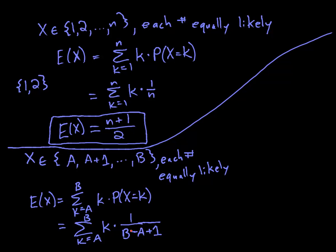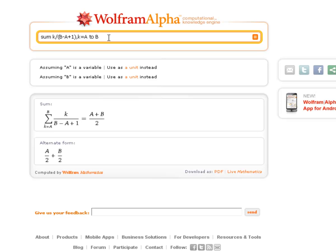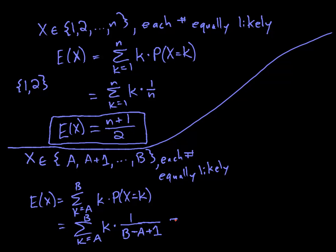We'll enter this into Wolfram Alpha. We have the sum of k divided by B minus A plus 1. And we're summing from k equals A to B. And we find that this is A plus B over 2. So if I go back to my blackboard here, this is just A plus B over 2.